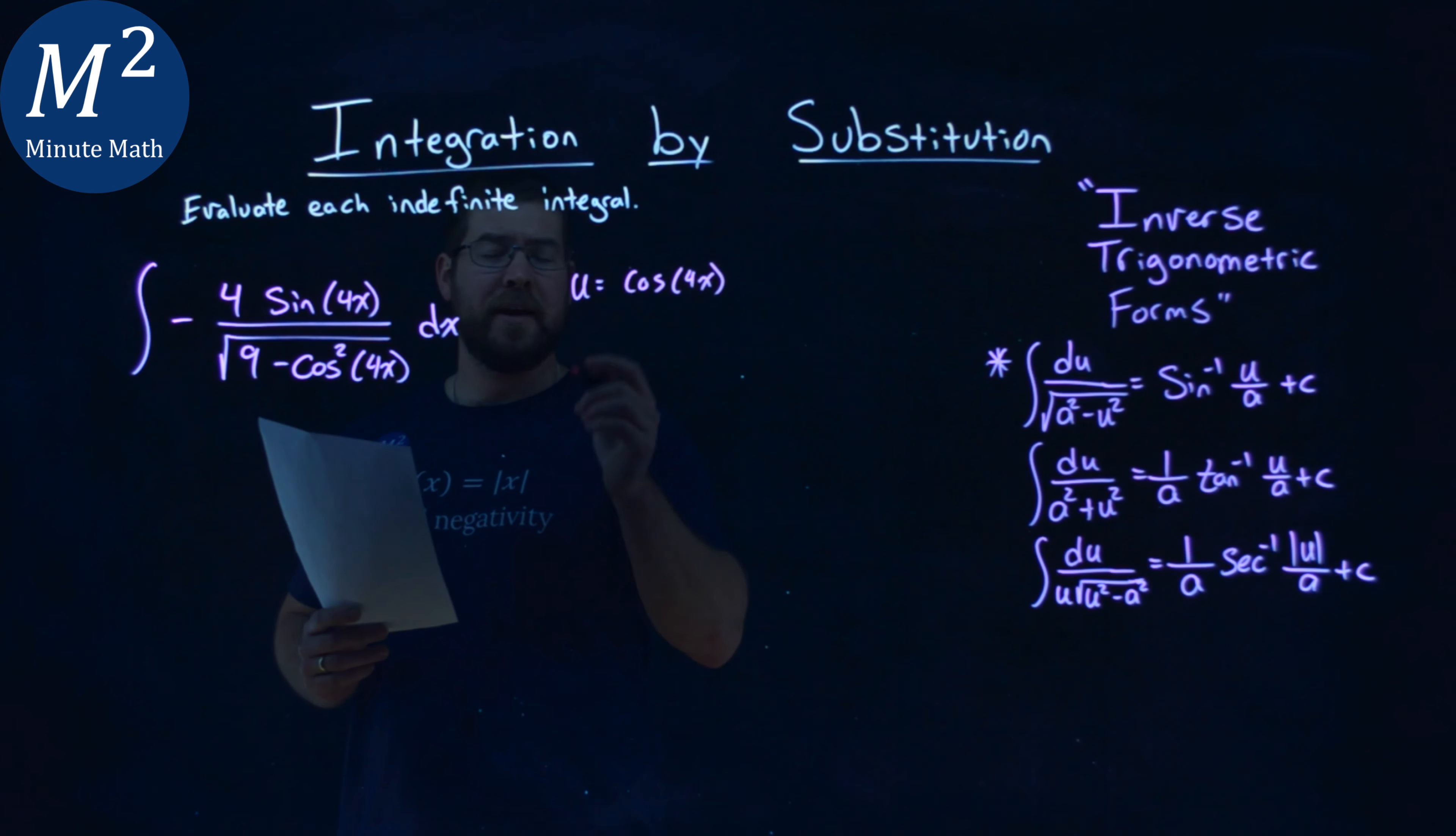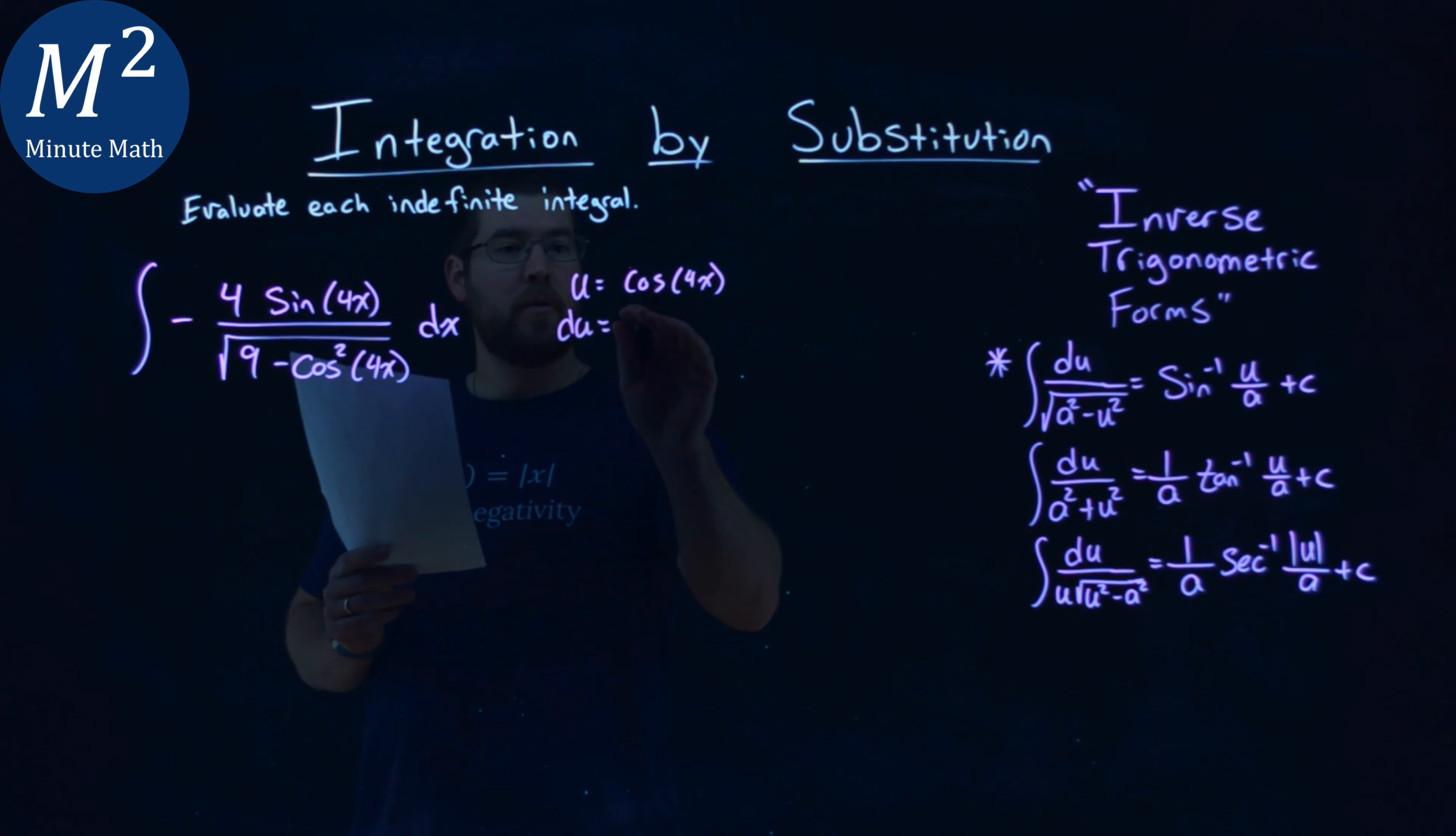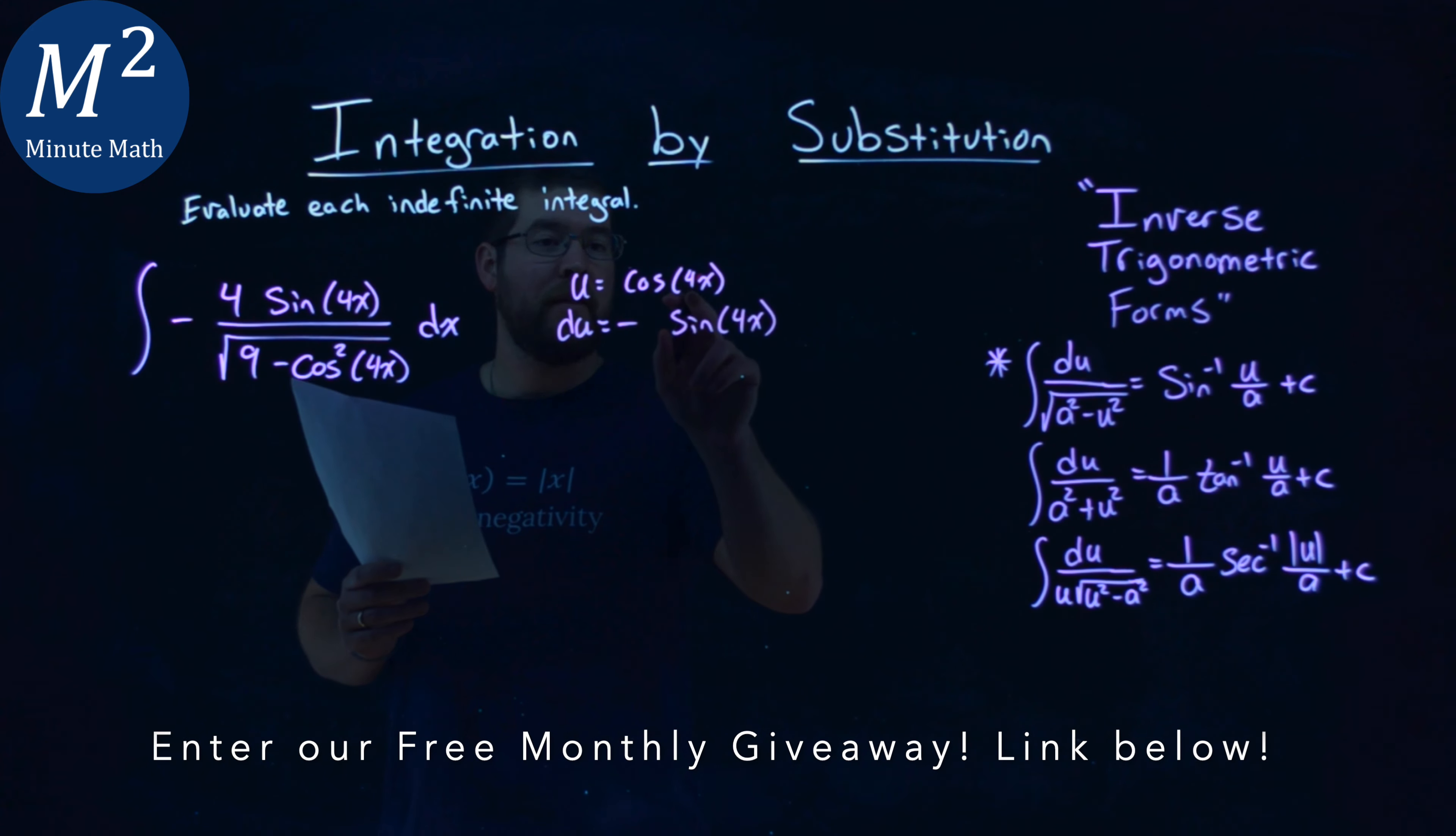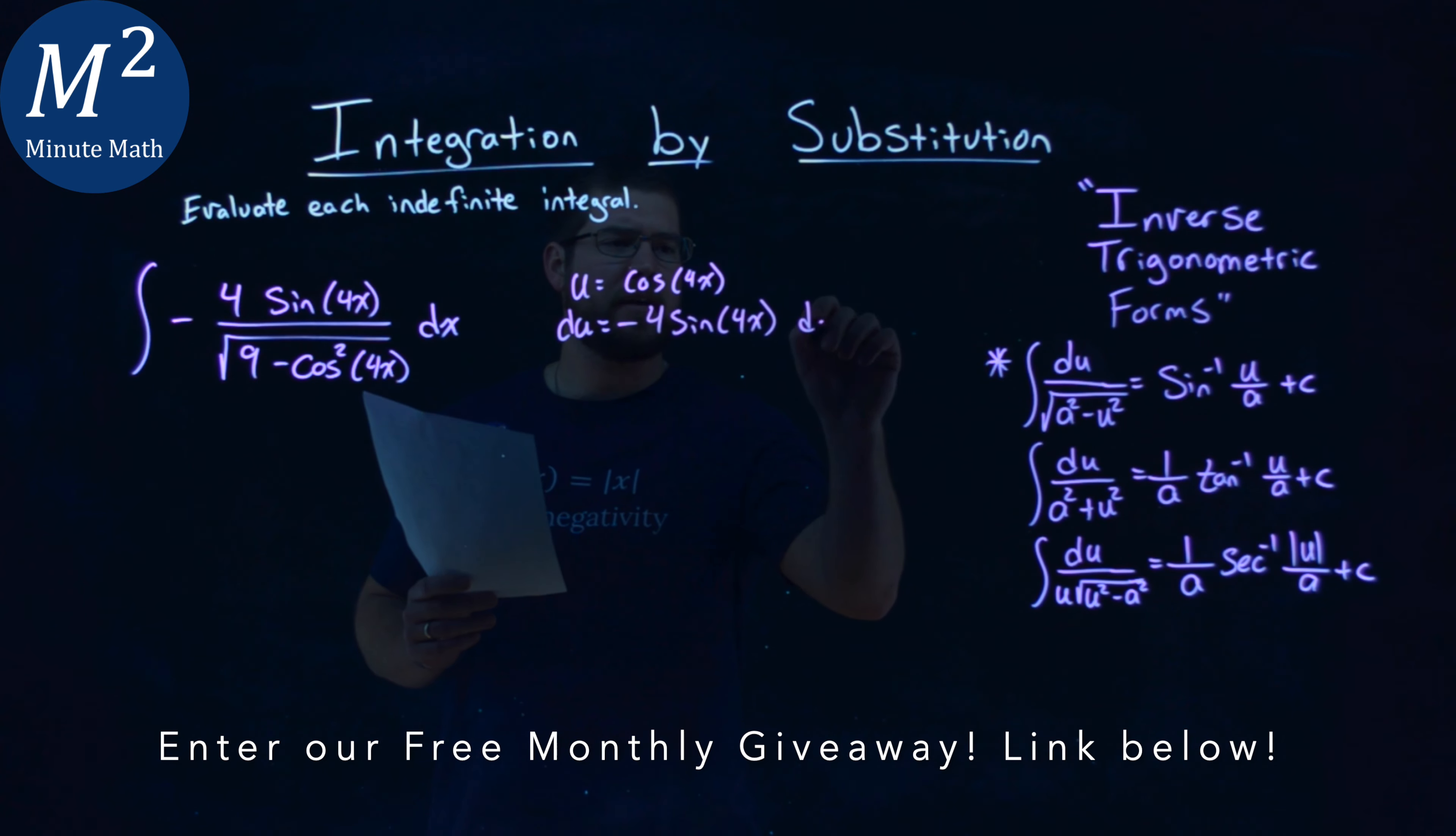If that's my u-value, I need to find my du-value. The derivative of cosine is negative sine, so we have negative sine of 4x, and that gets multiplied by the derivative inside, which is 4. Then we have dx.